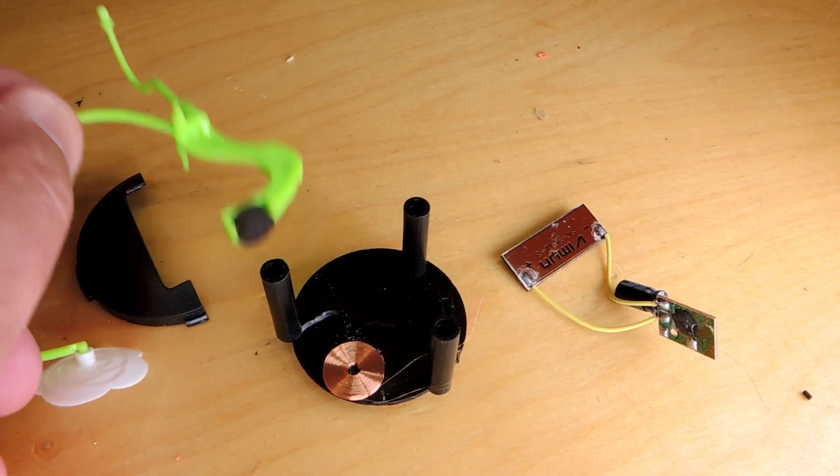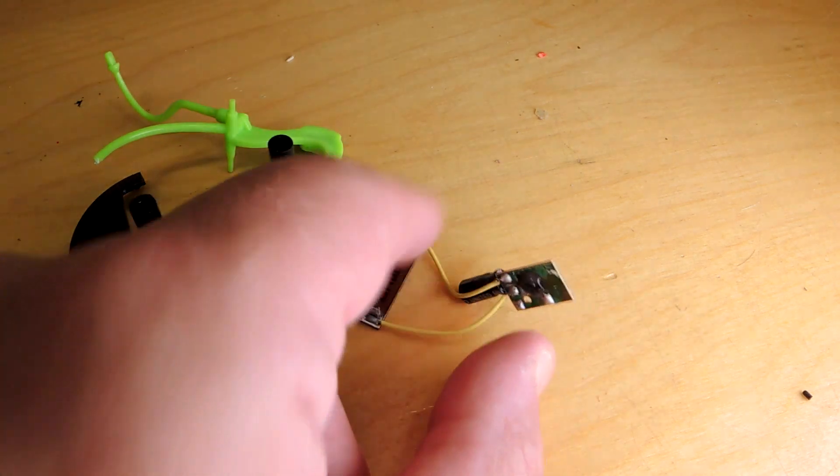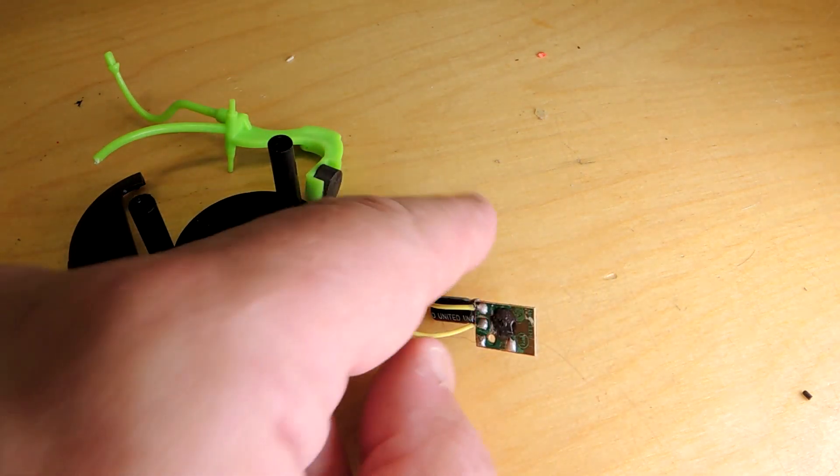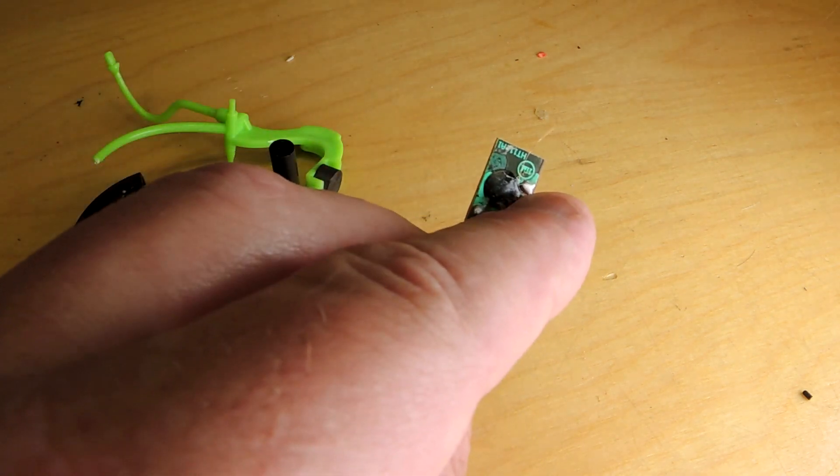So the arrangement of this one has a magnet on the flower, the voice coil here, and then the circuit board with the solar cell, the capacitor, and most importantly the small chip on board blob.